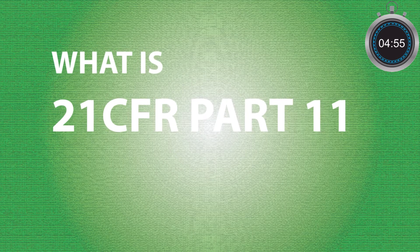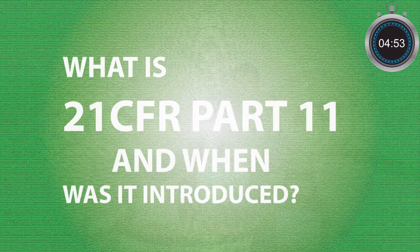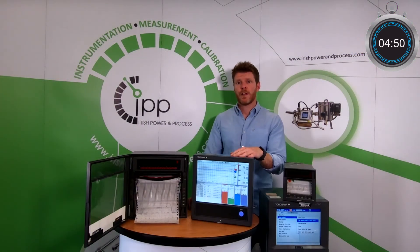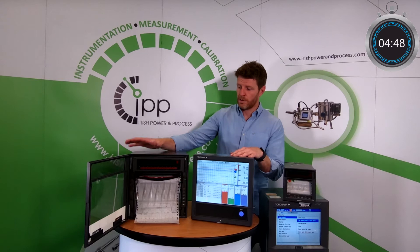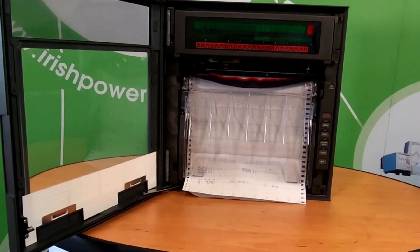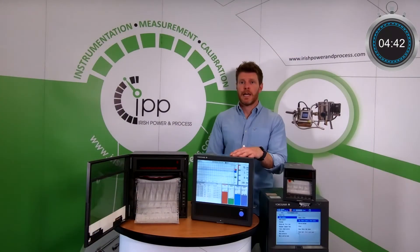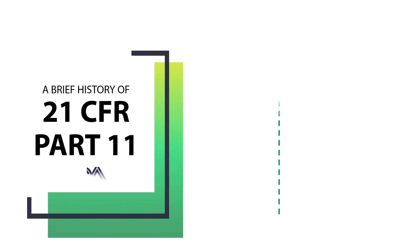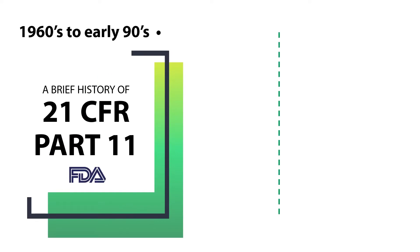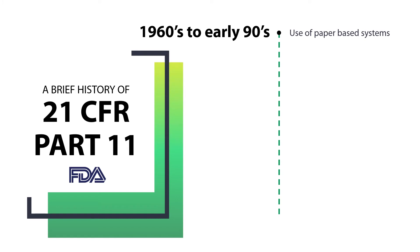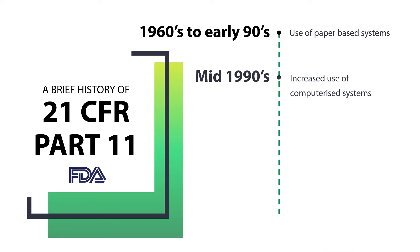What is 21 CFR Part 11 and when was it introduced? Right up to the early 90s, industry relied on paper-based systems such as your paper chart recorder right here to manually or automatically record their process or batch records. As computers became more accessible and affordable, the move to electronic or computerized systems then took hold. In the early 90s, the life sciences industry were actively using computerized systems and requested the FDA to introduce regulations for electronic documentation, records and signatures. This led to the introduction in 1997 of the 21 CFR Part 11 regulations.